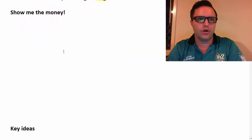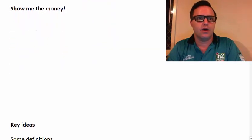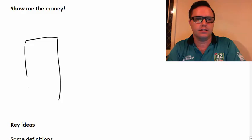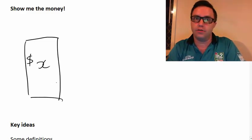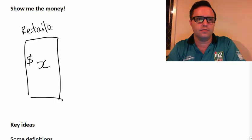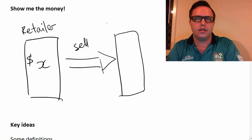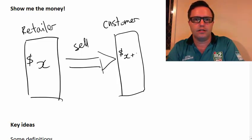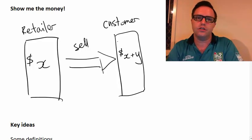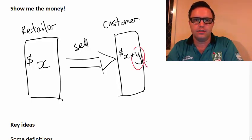All right, show me the money. Now, in business and things, what someone who owns a business is looking to do is they're looking to buy a product at some amount, so some X amount of dollars, and they're wanting to sell it to you, the customer, for X plus Y dollars. So this little extra part here is called our profit.